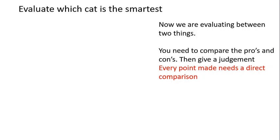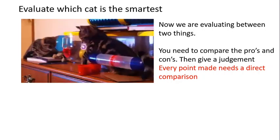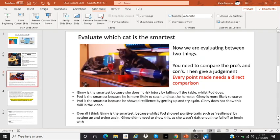Another type of evaluation is when we are evaluating between two different things. You still have to give pros, still have to give cons, and still have to give a judgment, but every point you make has to have a direct comparison. So evaluating between two things is actually much harder, because you have to give your pro, give your con, give your judgment, and make comparisons the entire time. So I want you to watch this video of two of my cats when they were kittens, and I want you to evaluate which one you think is smartest.